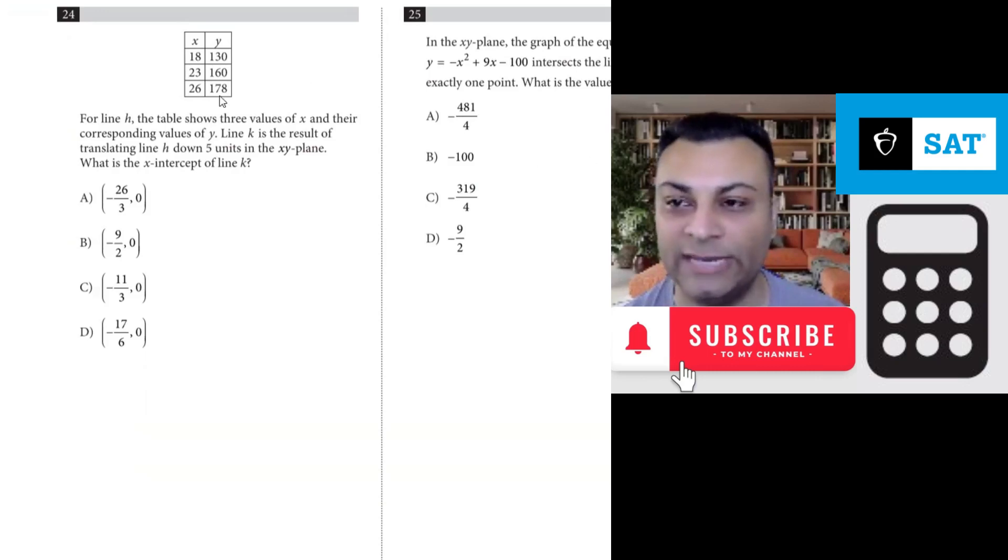Question 24. We're given a table for line H. The table shows three values of X and their corresponding values of Y. Line K, a completely different line, is the result of translating line H down five units in the XY plane. What is the X intercept of line K?